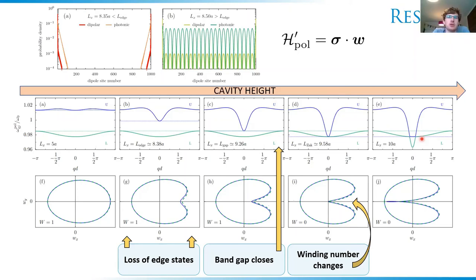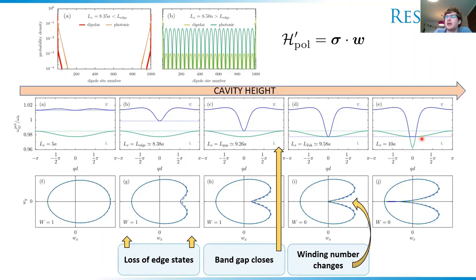We've also tested this when including all non-resonant terms. Instead of just tracing out the winding curve, we calculate the Zak phase from the non-resonant Hamiltonian, which upgrades the matrix to a six-by-six and we calculate the Zak phase in this way. And it seems robust.